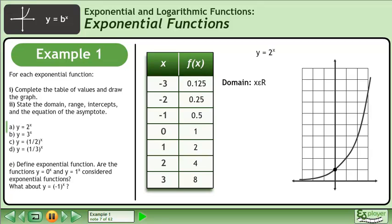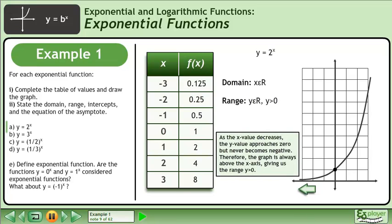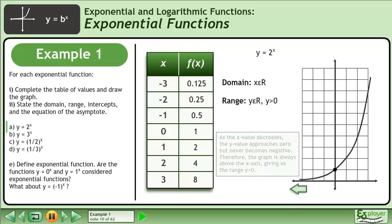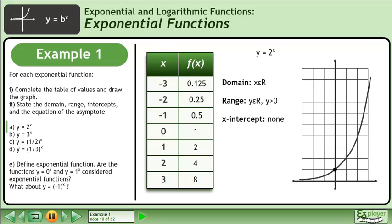The domain is x belongs to the set of real numbers. The range is y belongs to the set of real numbers, with the restriction that y is greater than 0. As the x-value decreases, the y-value approaches 0 but never becomes negative. Therefore, the graph is always above the x-axis, giving us the range y is greater than 0. There is no x-intercept. The y-intercept is (0, 1). The equation of the asymptote is y equals 0.